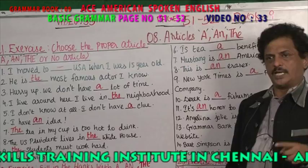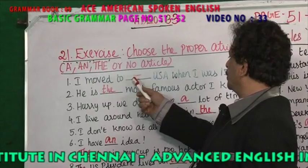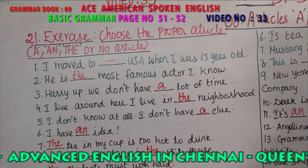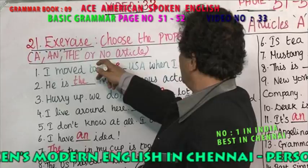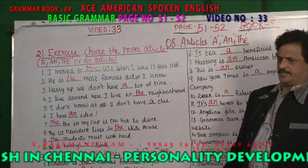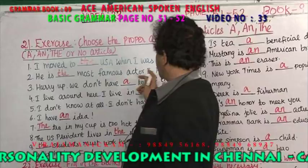Here: 'I moved to USA when I was 15 years old' — is that correct? No. The correct form is: 'I moved to the USA when I was 15 years old.' With United States of America, you use 'the.' Similarly: 'He is the most famous actor I know' — with superlative degree, you use 'the.'